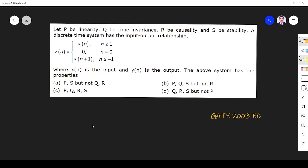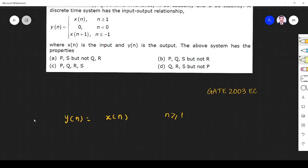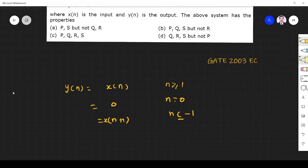The system properties we have to check are: y(n) equals x(n) for n greater than or equal to 1, equals 0 for n equals 0, and equals x(n+1) for n less than or equal to minus 1.